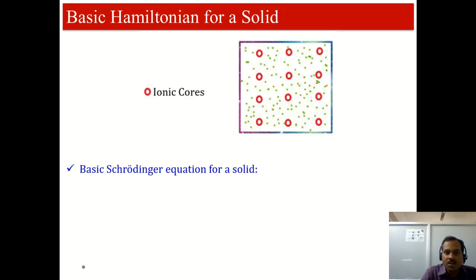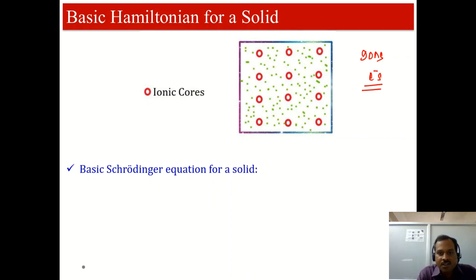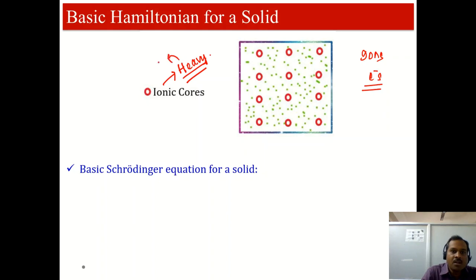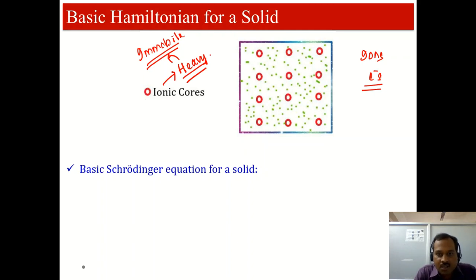Before going into that, let us look at the solid in its holistic picture. We know that the solid contains ions and electrons — those are the basic constituents of a solid at the low energy physics regime. The ions have heavier mass and are almost immobile compared with the motion of the electrons. The electrons have lighter mass and are mobile. Although the ions can move about their equilibrium position, as discussed in our previous module on lattice vibration, that motion is very small compared to the free motion of the electrons, especially the conduction electrons.